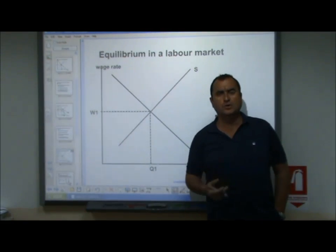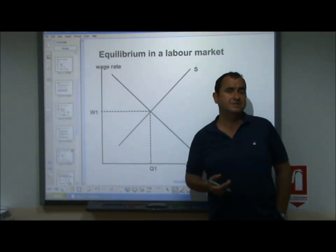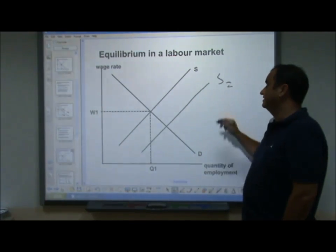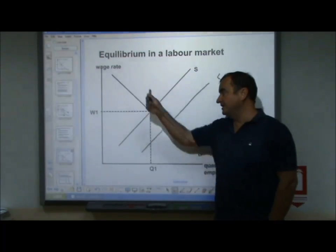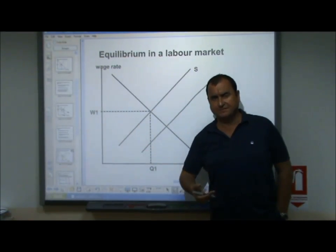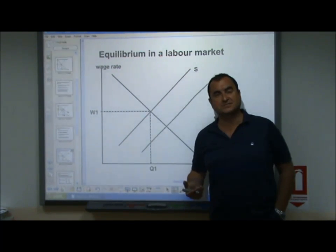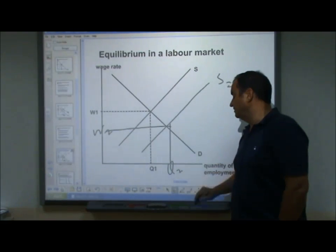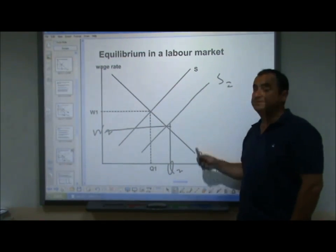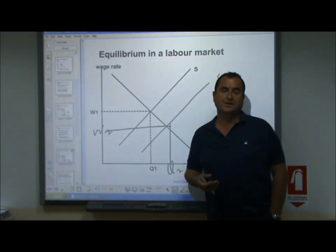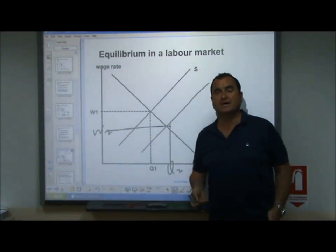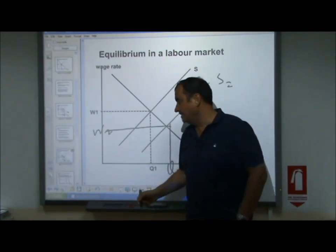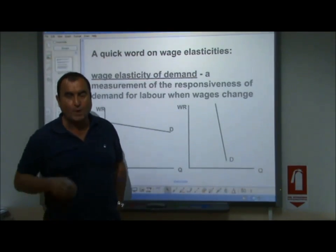For example, if the government passes a law lowering income tax and reducing benefits available to people not working, that is likely to raise the supply of labor - more people at every wage rate say they're willing to work because they aren't taxed as much, or because benefits are so poor they can't live on them. This has the effect of lowering the wage rate and increasing the quantity of people working. This effect could also occur from net immigration, population growth, or a higher retirement age.